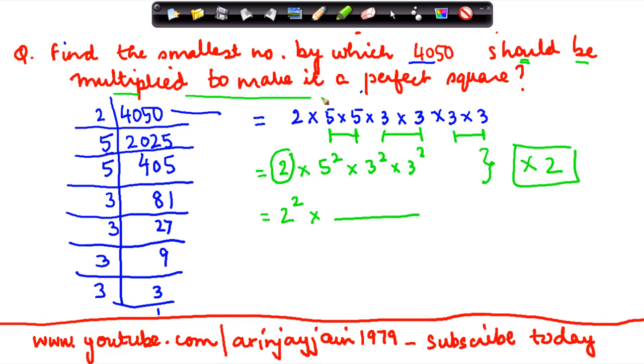Now again, if suppose I was told that instead of multiplication, which number should this be divided by to make it a perfect square? If I divide this by 2 also, then this 2 would have gone and what I was left with—only this portion—this again would have been a perfect square.